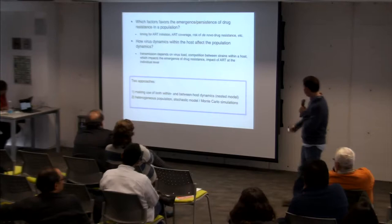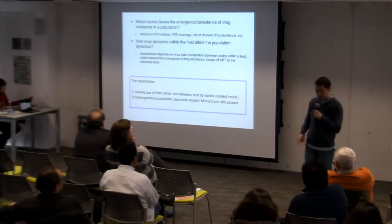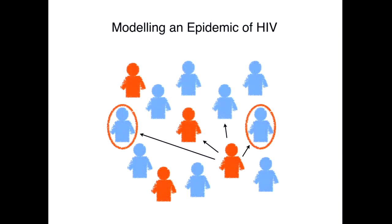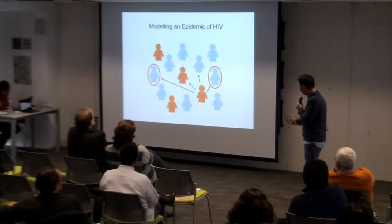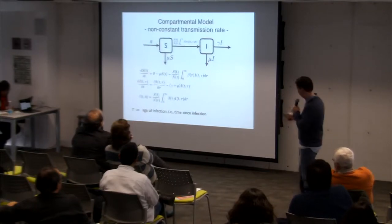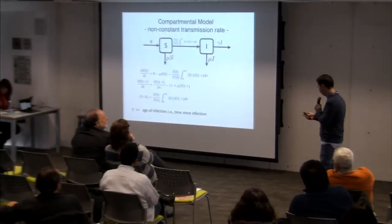For the nested model, we're thinking about the epidemic of HIV. We started with one of the simplest models — we think of the population as a homogeneous population with random contacts, using a compartmental model. But the key difference is we use a non-constant transmission rate. This framework has been used before for HIV and for other diseases.